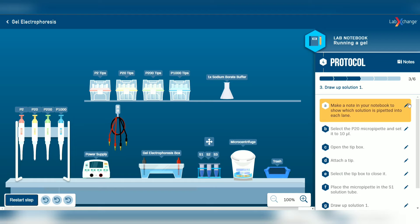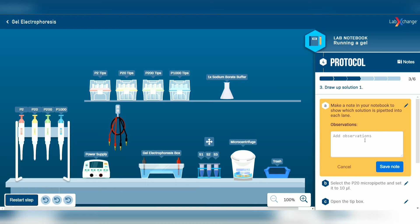Thirdly, we have to write down which solution is going to be pipetted into each lane. So first, the S1 is going to lane 1 and solution 2 is going to lane 2, and we check the notes.